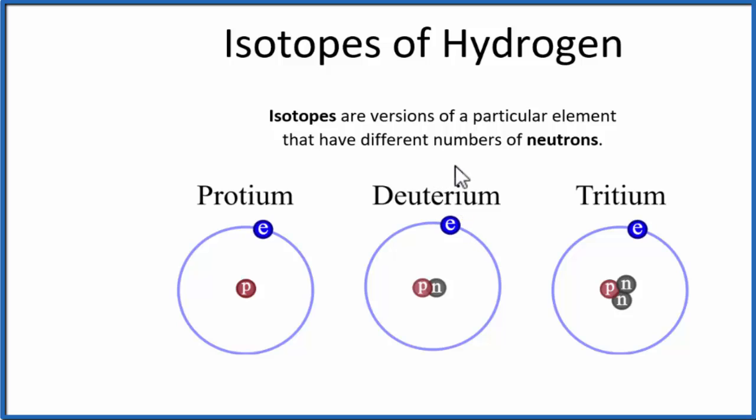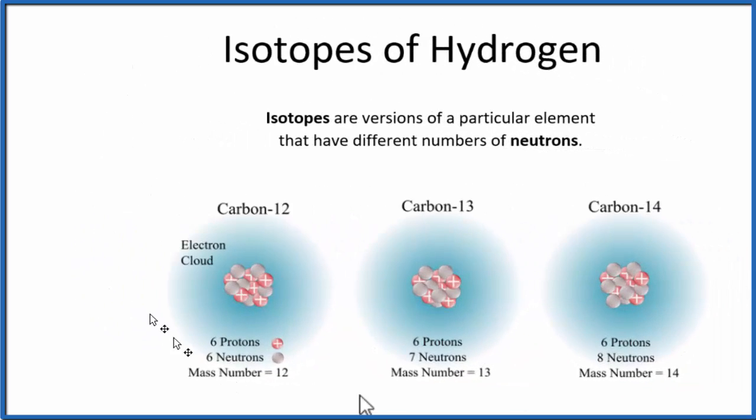Let's look at carbon to understand this a little bit better, and then we'll look at the isotopes of hydrogen. When we look at carbon, we have three different atoms—these atoms are different versions of carbon.